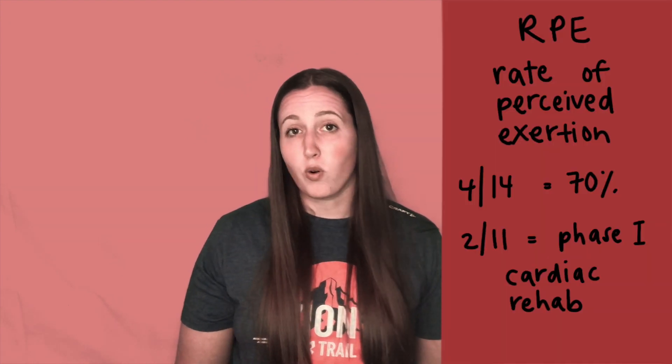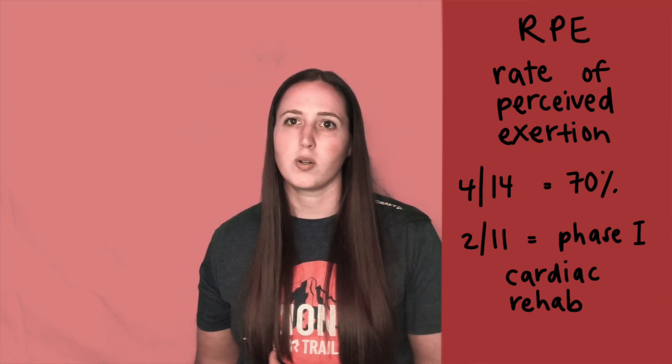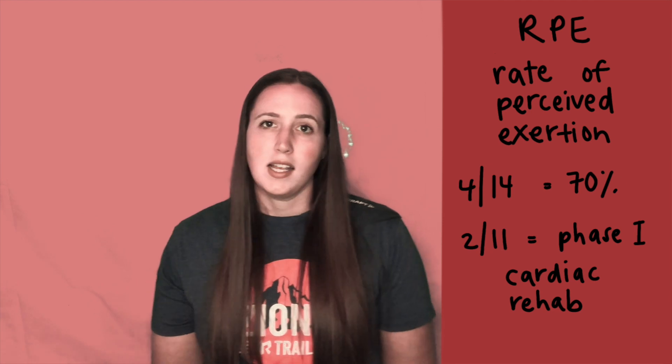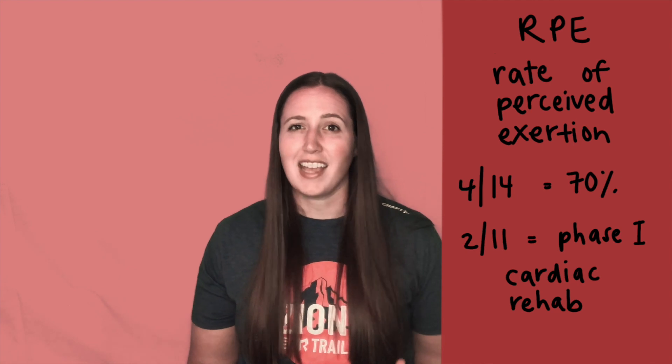This is probably the biggest thing you want to know for the NPTE, because patients that have any kind of cardiac issue — their hearts are not going to respond as they normally would to exercise, and so you can't use things like target heart rate or even RPP. Usually a 4 or a 14 indicates about 70% of their max heart rate, and a 2 or 11 is the starting maximum for cardiac rehab phase 1, so you can use those to gauge where they're at.